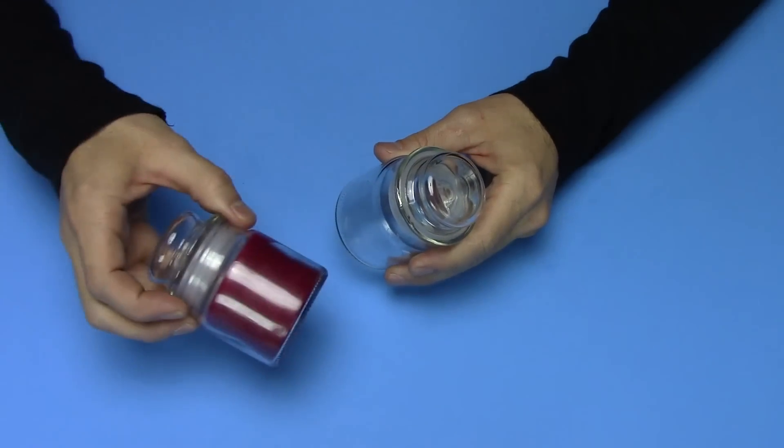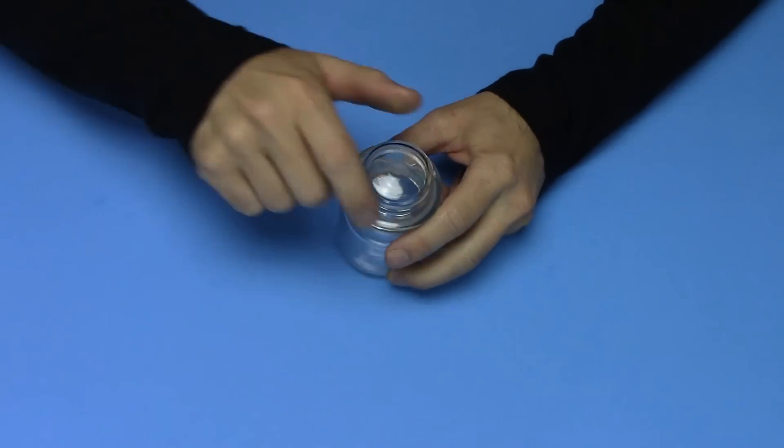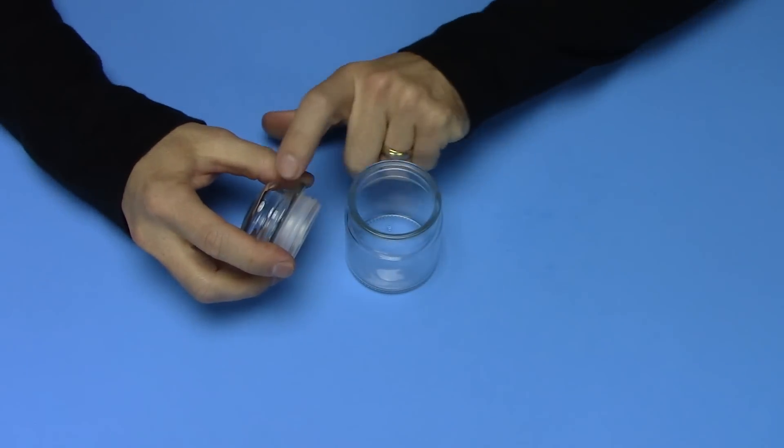Take a small glass jar. This one is from an old candle. Go ahead and remove the lid so you can drill a hole into the side of your lid.